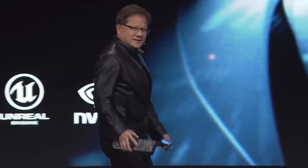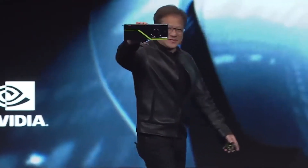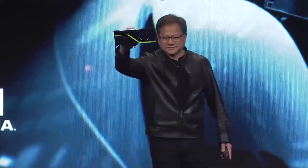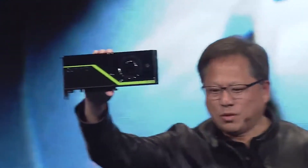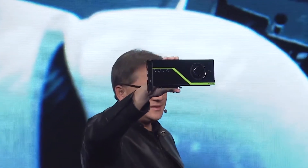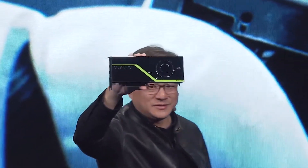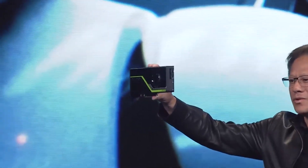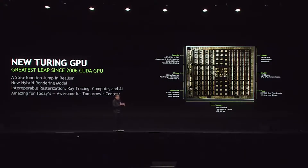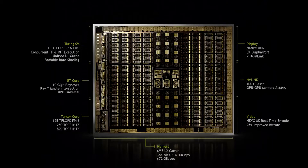The Turing architecture was first introduced by NVIDIA CEO Jensen Huang during SIGGRAPH 2018 in Vancouver, Canada. Turing was developed and brought to market with a singular goal: to bring real-time ray tracing to professional graphics. Turing includes new RT cores to dramatically accelerate ray tracing and optimized Tensor cores for AI training and inference.